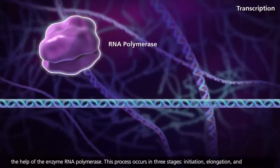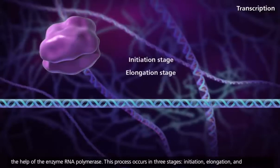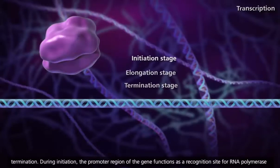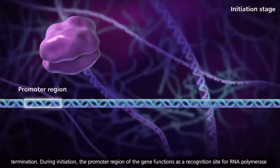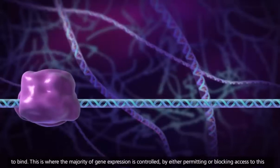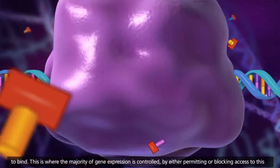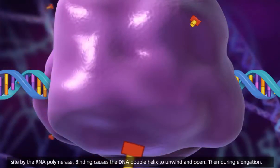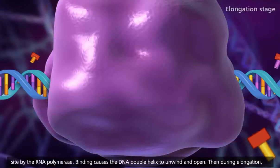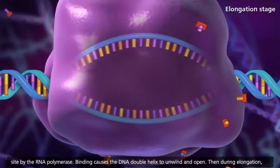This process occurs in three stages: initiation, elongation, and termination. During initiation, the promoter region of the gene functions as a recognition site for RNA polymerase to bind. This is where the majority of gene expression is controlled, by either permitting or blocking access to this site by the RNA polymerase. Binding causes the DNA double helix to unwind and open.